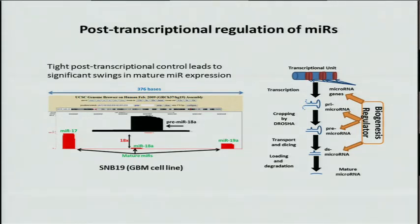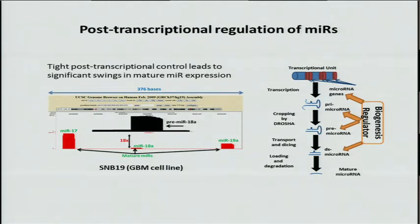Looking at this very well-studied cluster of oncomiRs, the distance between MIR-17 and MIR-19A on the genome is less than 400 bases, yet even though they're co-transcribed, the expression of mature MIR-18A is almost 20 times less than that of MIR-17. Looking at the top track in black, we can see evidence for the accumulation of PRE and PRI intermediary products of MIR-18A, suggesting that its biogenesis is not as efficient as that of its flanking microRNAs.